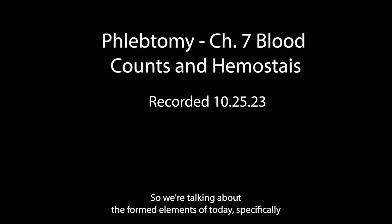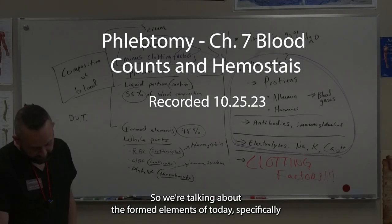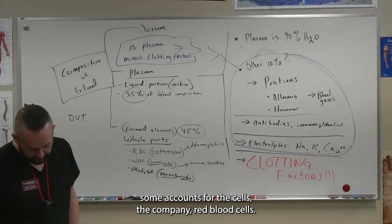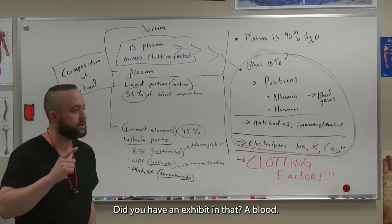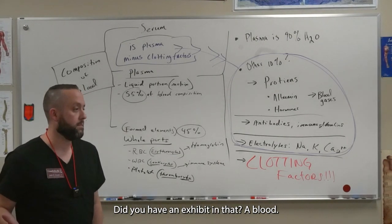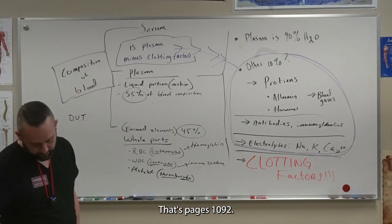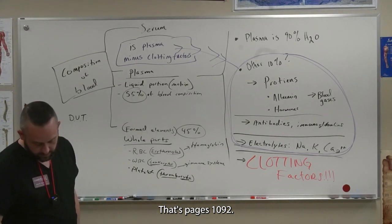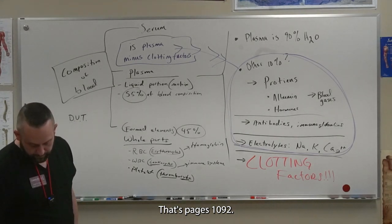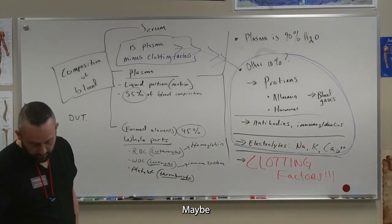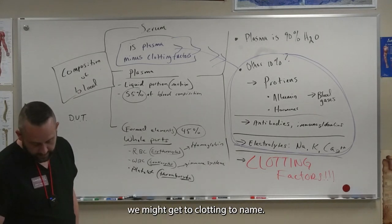Okay, so we're talking about the formed elements of blood today, specifically some counts for the cells, like how many red blood cells you have in a given amount of blood. This is page 109. We might get through clotting today.